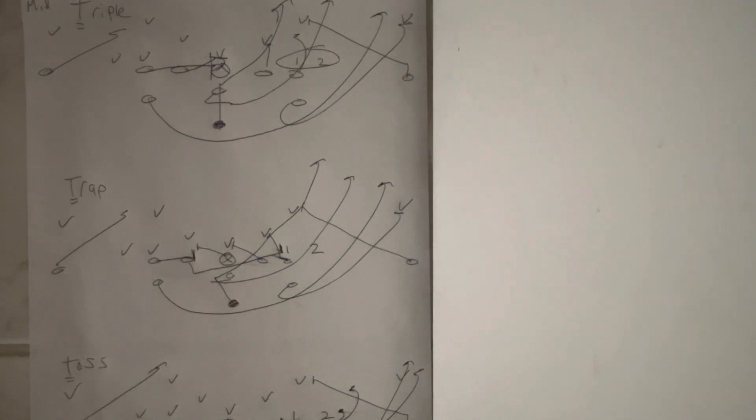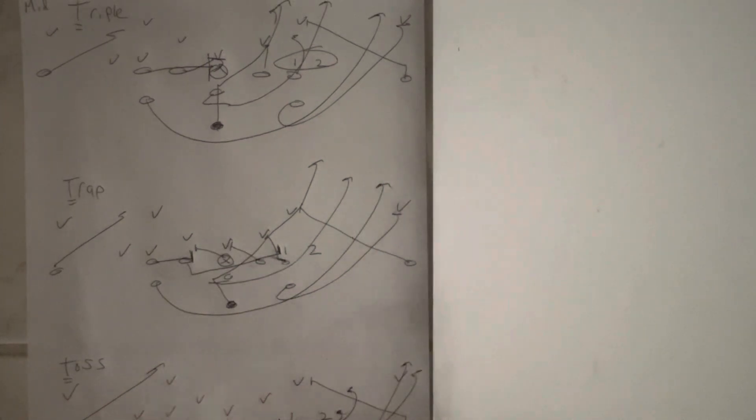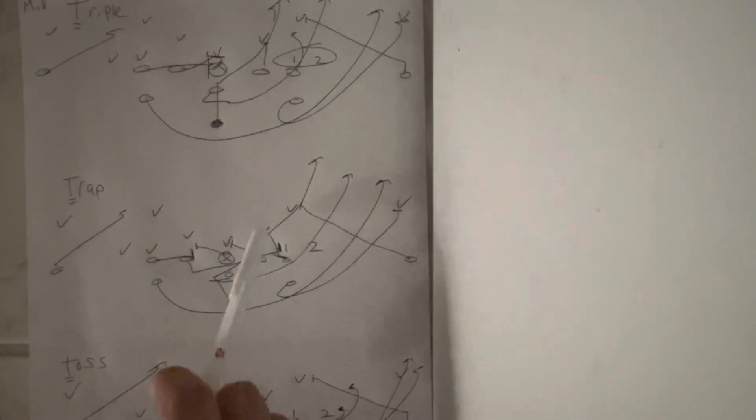But oftentimes you would see Air Force, if they were not successful on mid-triple, they would come back and run the trap the next play, regardless of what occurred, whether it was a give read or a pull read or a pitch. So they would trap number one, and then basically the tackle veers inside. The guard is gap down backer. The center is gap down backer. The guard traps number one, helmet to the left, right forearm, traps him out of bounds, backside tackle scoops.